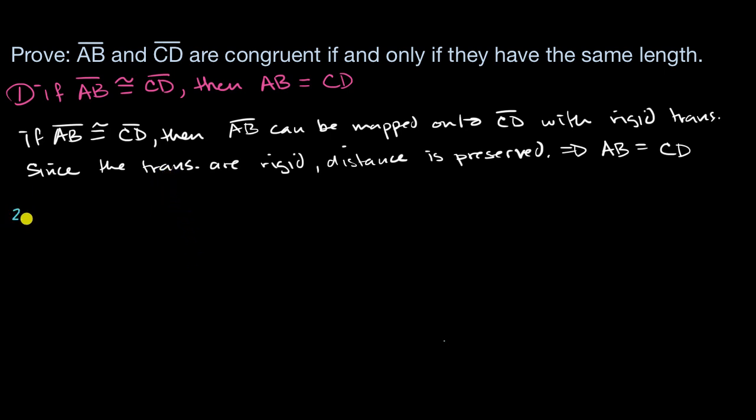So now let's see if we can prove the other way. Let's see if we can prove that if the length of segment AB is equal to the length of segment CD, then segment AB is congruent to segment CD. And let me draw them right over here, so let's say I have segment AB right over there, and I'll draw another segment that has the same length. So maybe it looks something like this, and let's call this C, D.